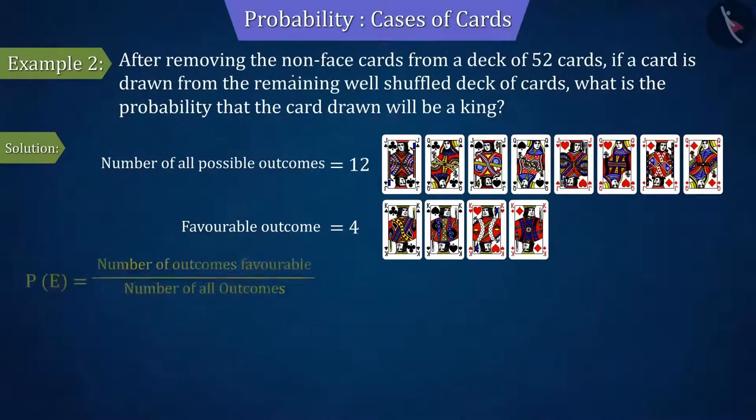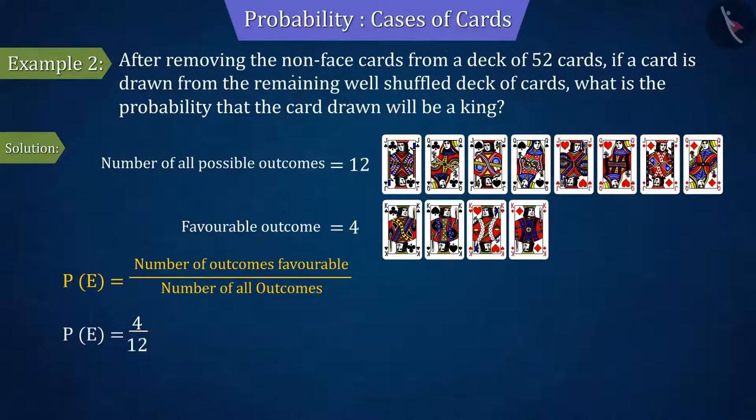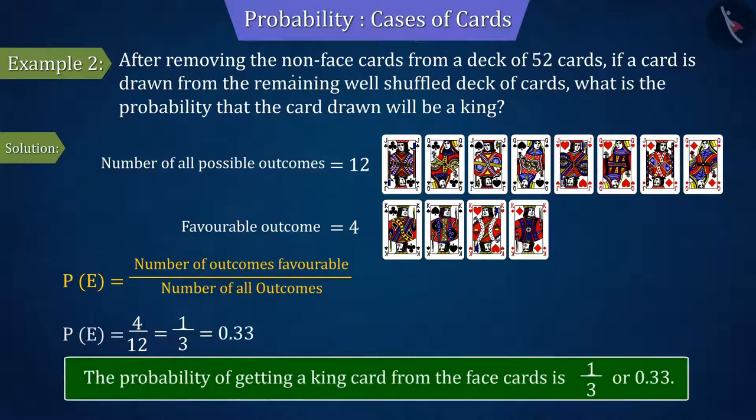Therefore, by substituting the values of the above outcomes in the probability formula, the probability of getting a king card from the face cards is 4 by 12 or 0.33.